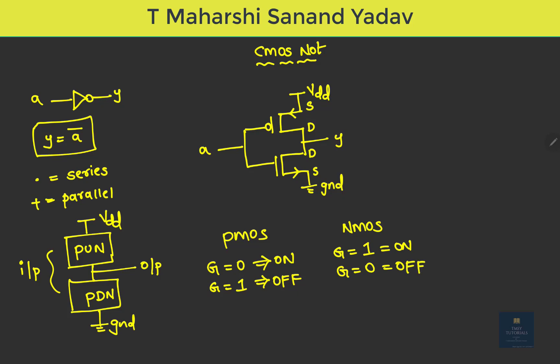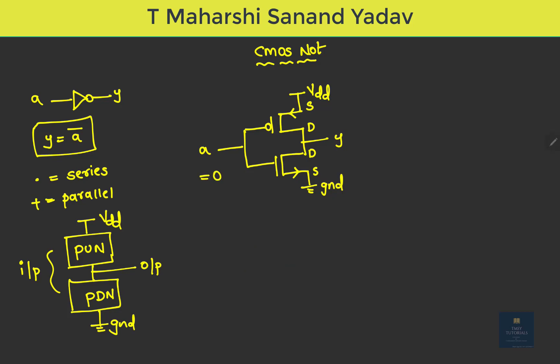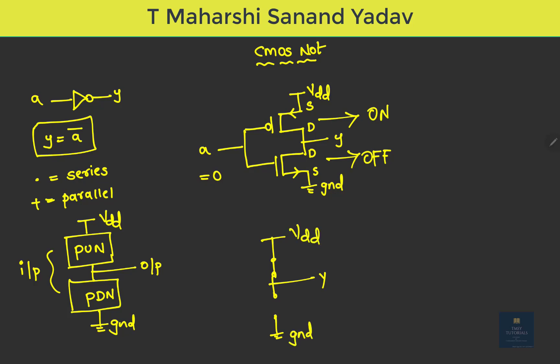Using this, we apply two input combinations. When A = 0, the PMOS is ON and the NMOS is OFF. The PMOS acts as a short circuit and the NMOS acts as an open circuit. The output Y is directly connected to VDD, which is logic 1. So when A = 0, the output is 1.